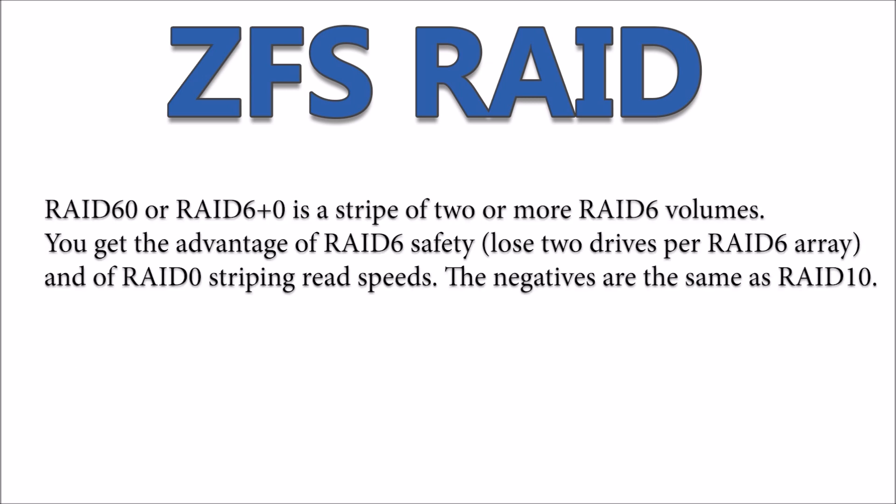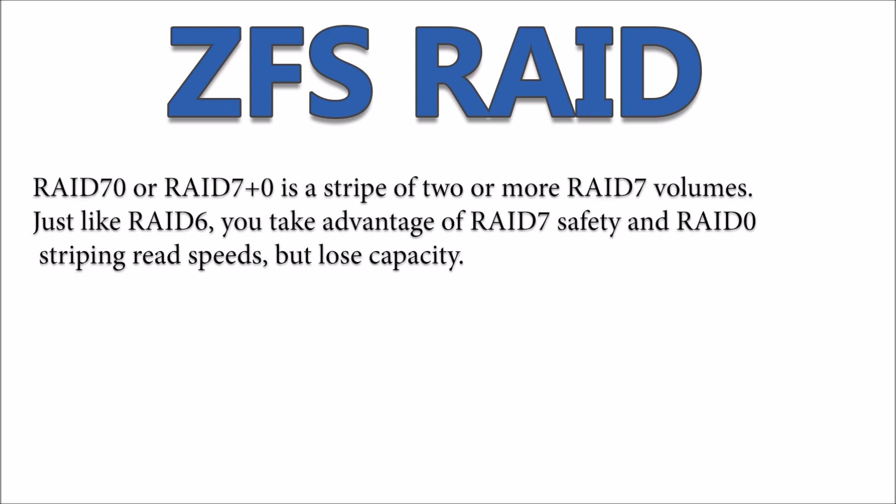RAID 60, or RAID 6 plus 0, is a striping of two or more RAID 6 volumes. You get the advantage of RAID 6 safety — you can lose two drives per RAID 6 set. RAID 70, or RAID 7 plus 0, is a stripe of two or more RAID 7 volumes. You take the advantage of RAID 7 safety and RAID 0 striping speeds, but you lose some capacity.